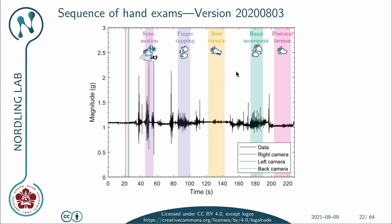Then we have a short break followed by a demonstration video for the postural tremor test, and then we record the postural tremor data. Here in black you have the accelerometer data magnitude, and then in different colors marked are the time intervals during which we have been recording the video data. The lines indicate differences in the starting time point for the videos, which we have removed by synchronizing them using the app in the tablet.